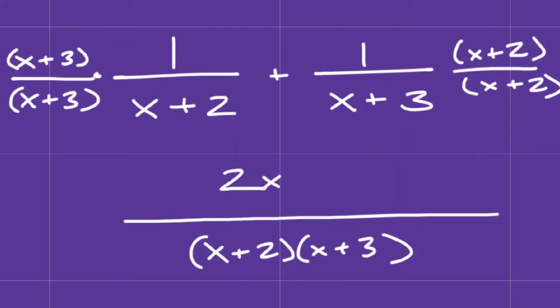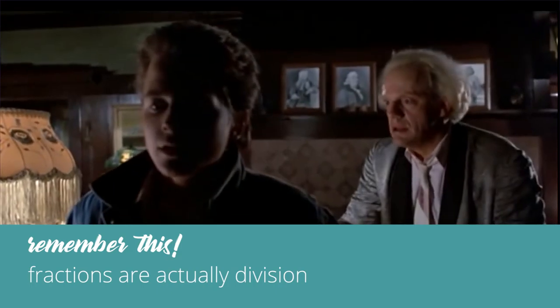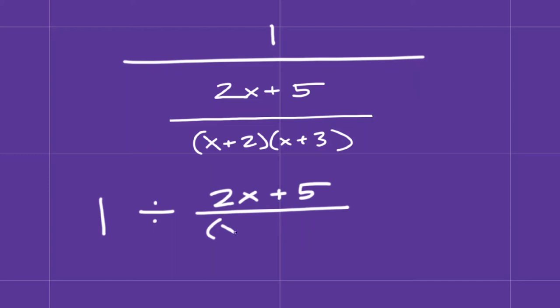We now have a single fraction at the bottom. The secret to moving on from here is to recognize that fractions are actually divisions. In this case, we have 1 divided by the bottom fraction.